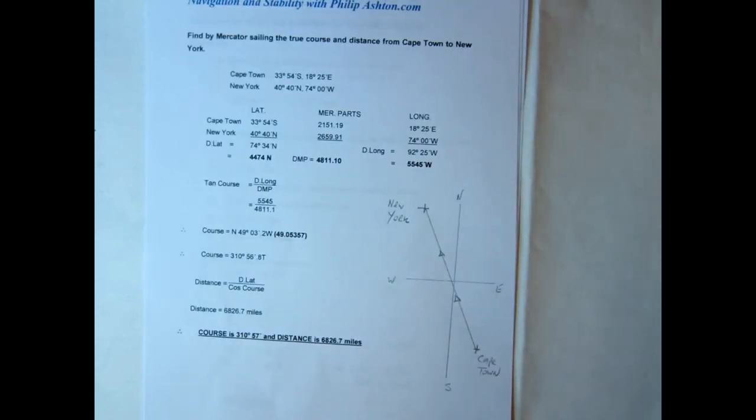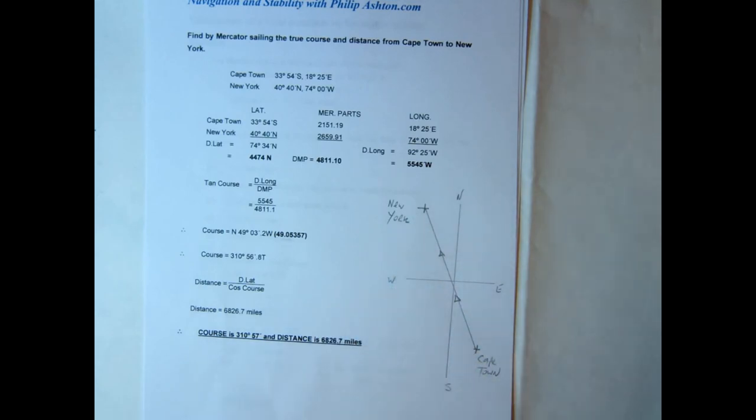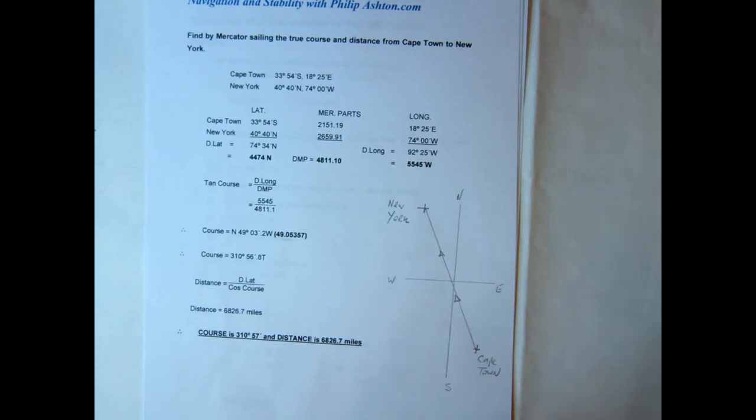We'll look at another example going from Cape Town to New York. I've drawn approximate positions with arrows indicating the direction we're going, just to show that's a way you can ensure you name your course the correct way.